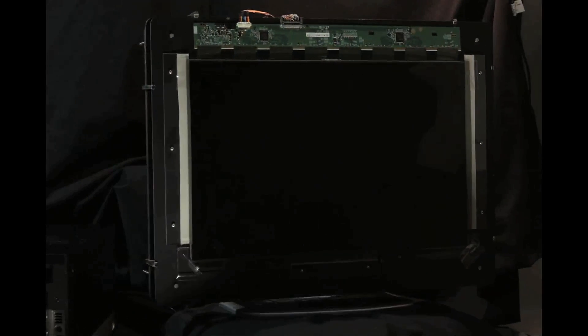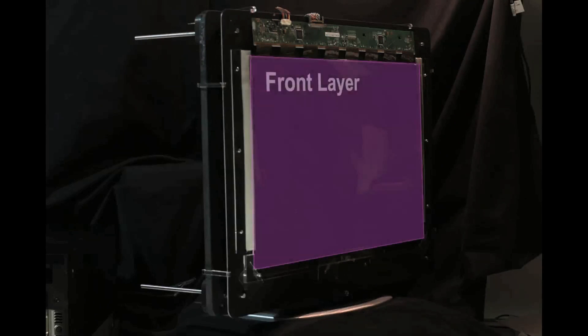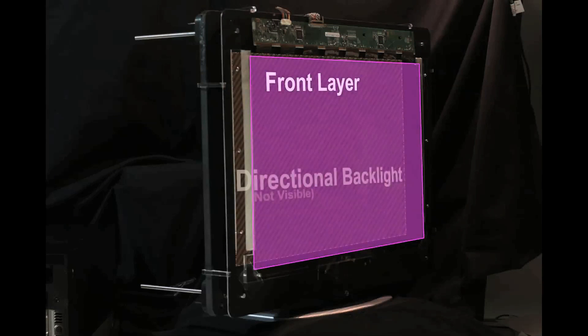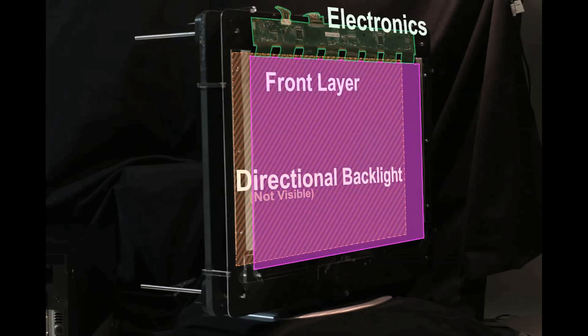Here, the prototype is assembled in the directional backlight configuration. The front LCD layer sits atop a directional backlight, which is obscured while assembled. The LCD driver electronics are mounted with the panel on an aluminum plate. The plate is accurately positioned using a rail and clip system.